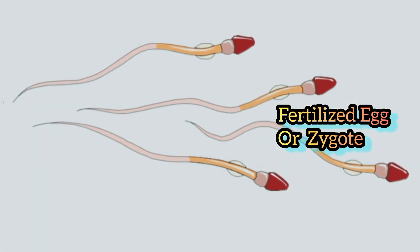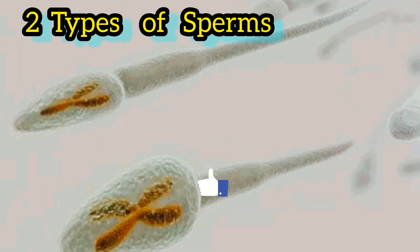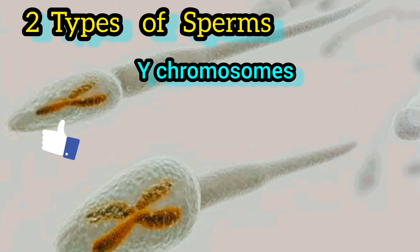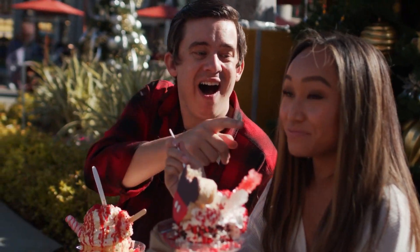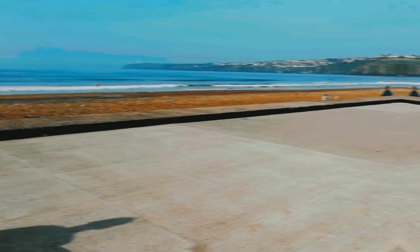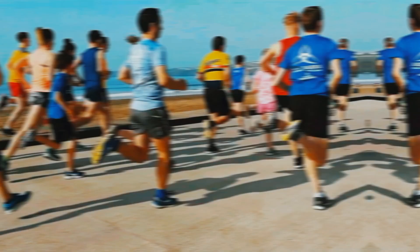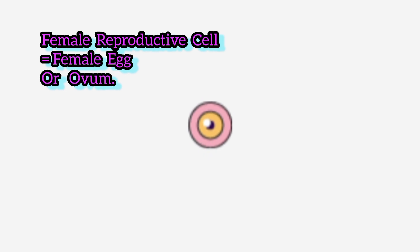There are two types of male sperm: those containing X chromosomes, or girl-making chromosomes, and those containing Y chromosomes, responsible for the male gender. But there is only one type of female egg — they all contain the X chromosome, defined as the female sex chromosome. Male sperm are also known as male reproductive cells, and female eggs or ovaries are also known as female reproductive cells.